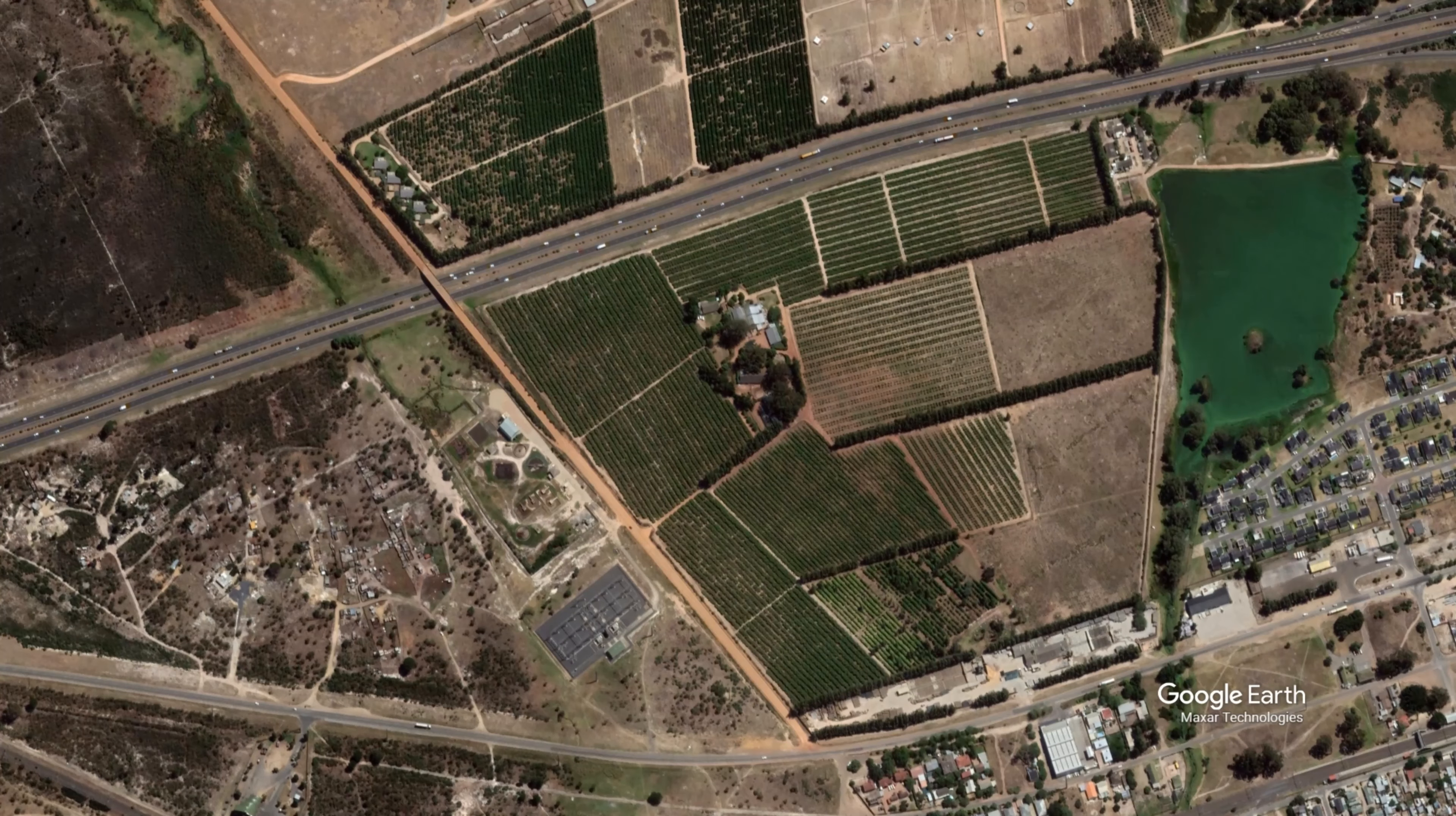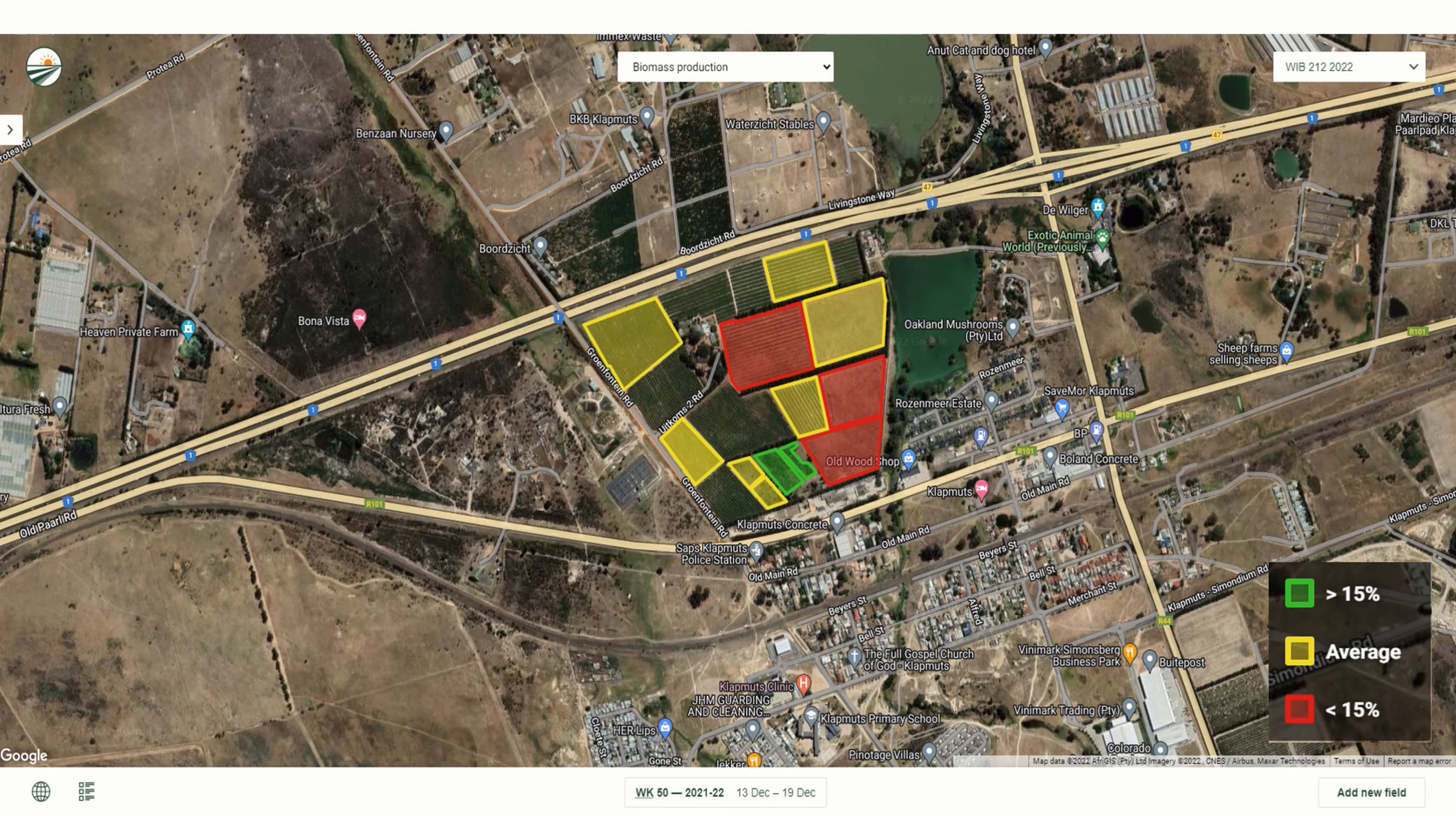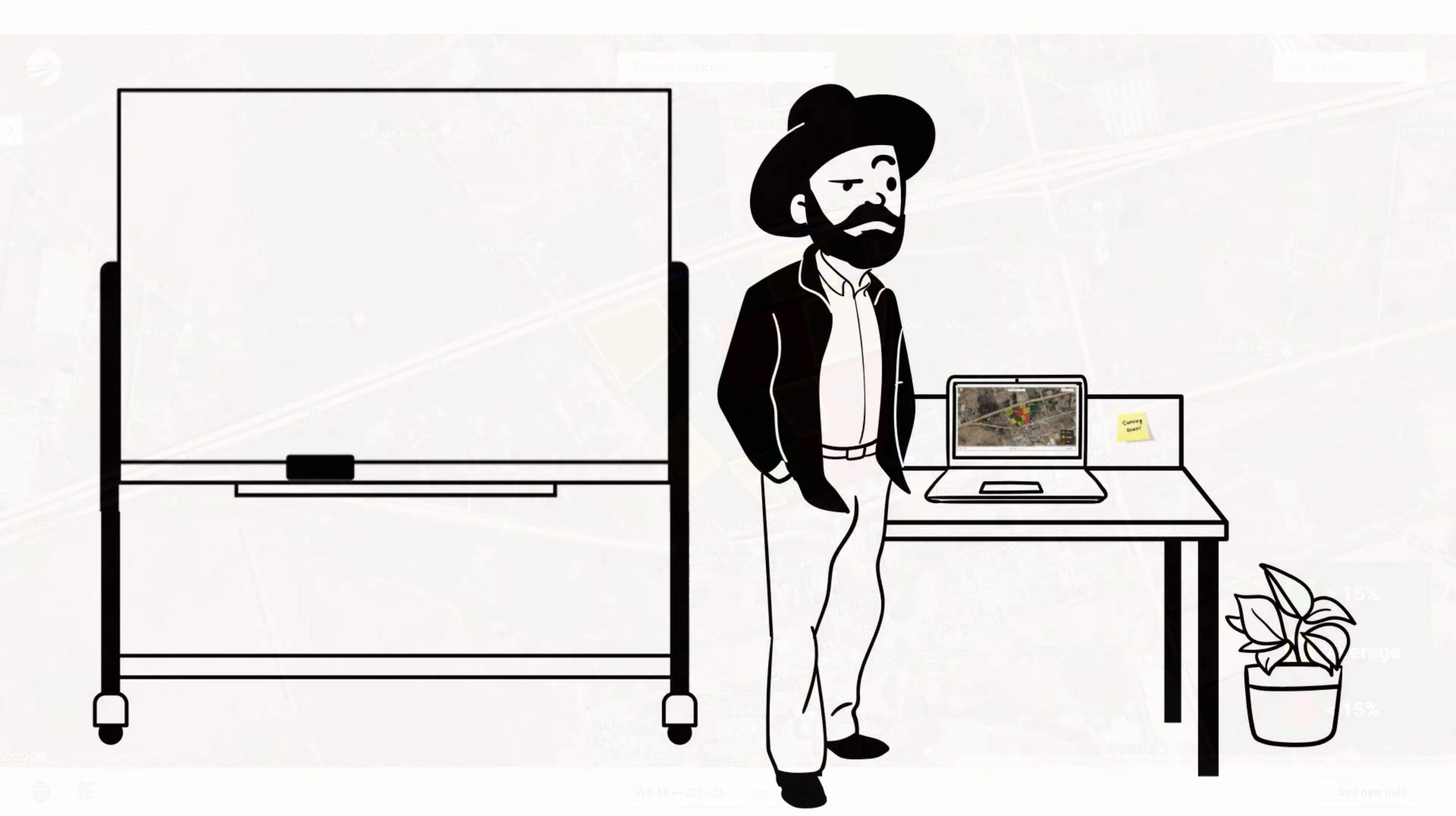Have you ever noticed that your blocks on Fruitlook are displayed in the colors green, red or yellow?